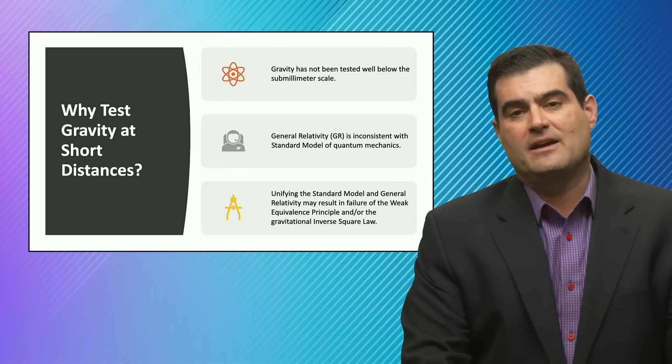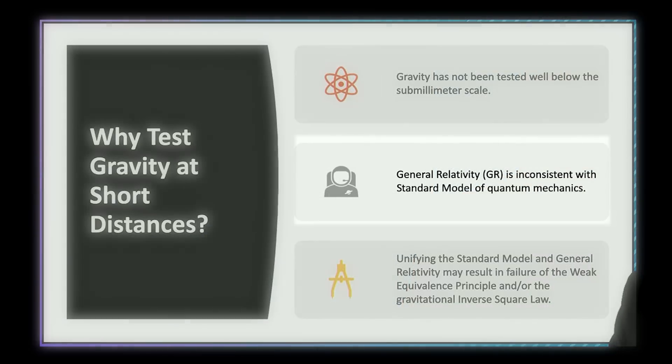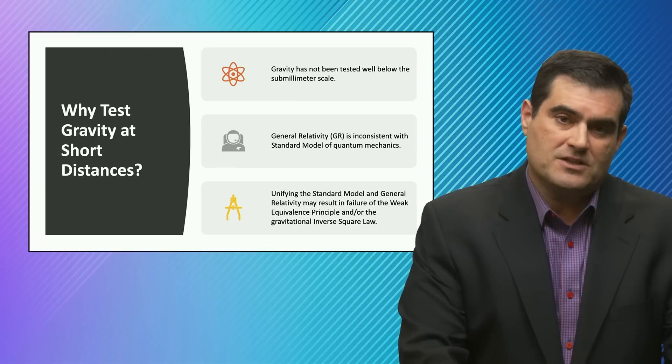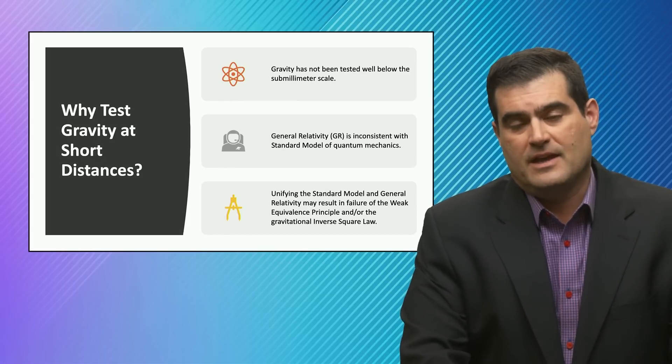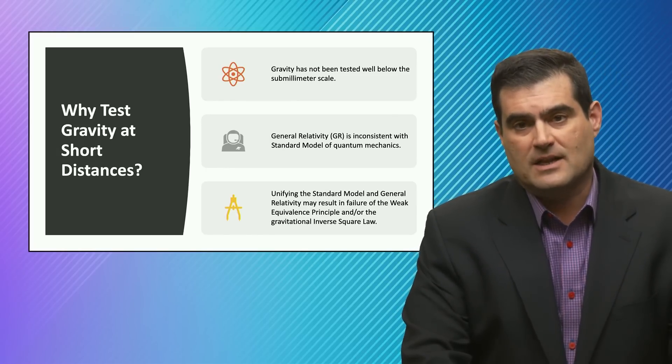GR and quantum mechanics are incommensurate, incompatible with each other, so you'd like to study that close to the regime scale where both effects are operative, namely on the smallest scales and gravitational force fields we can test in the laboratory.